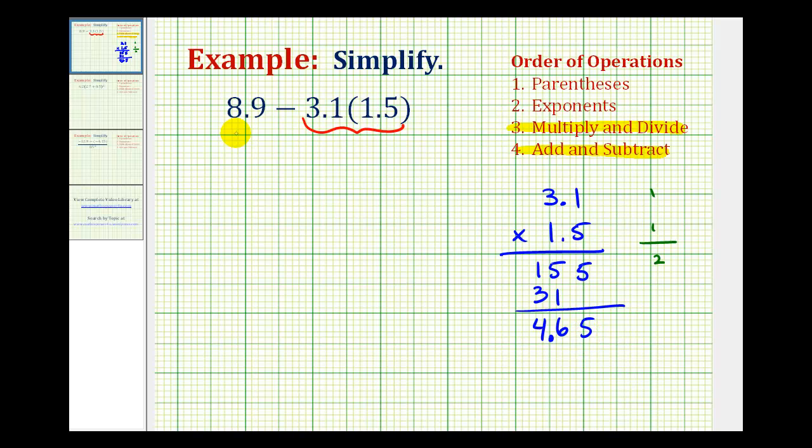So we can rewrite this as 8.9 minus 4.65. So now we can subtract. But to subtract this, we'll do this vertically, lining up the corresponding place values.